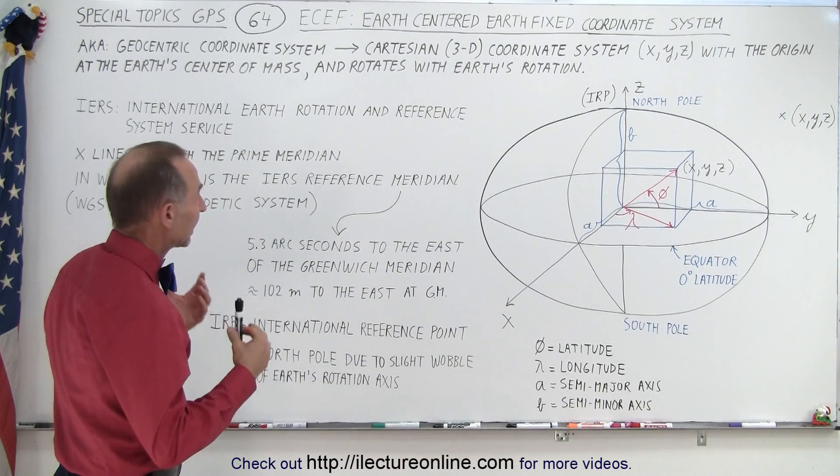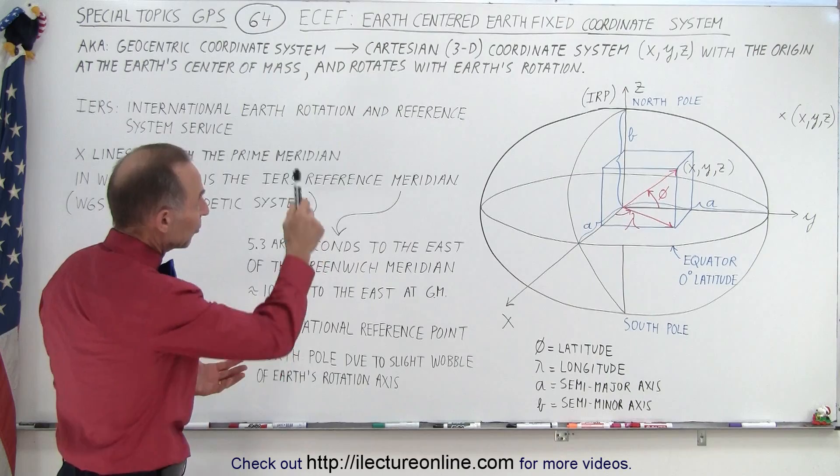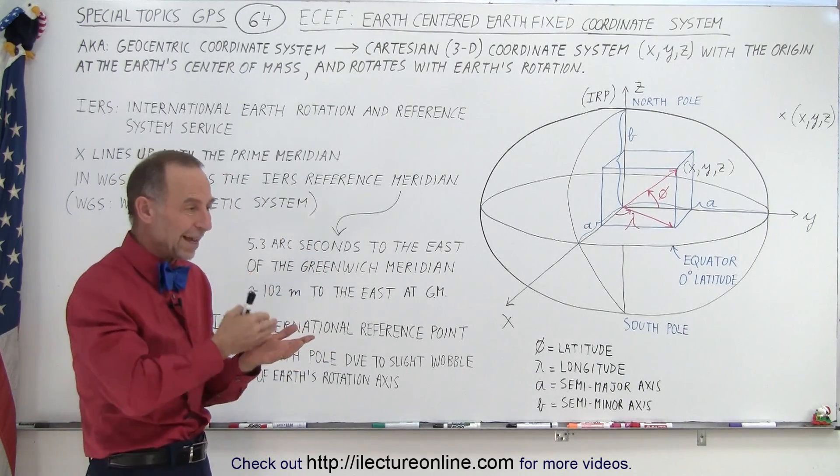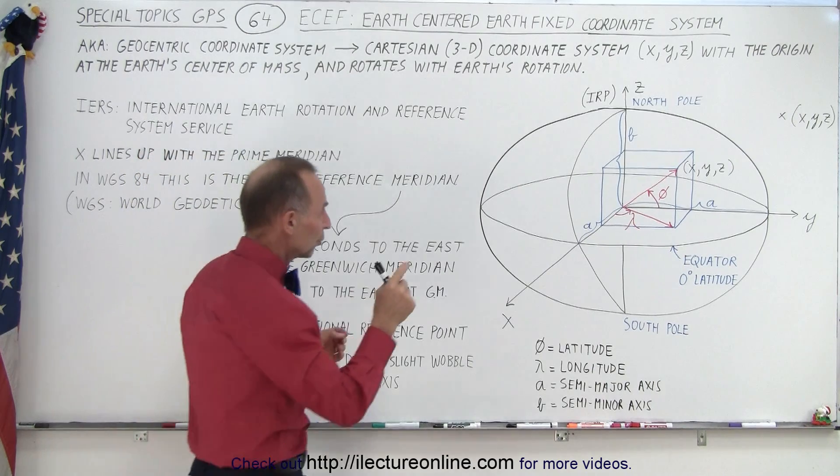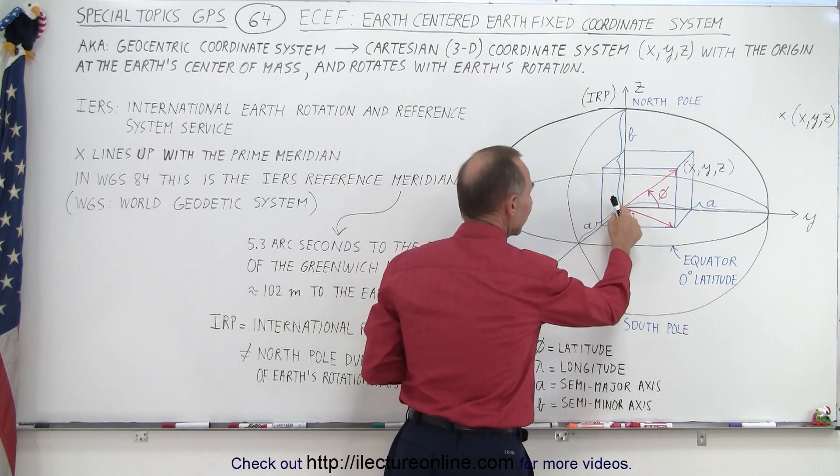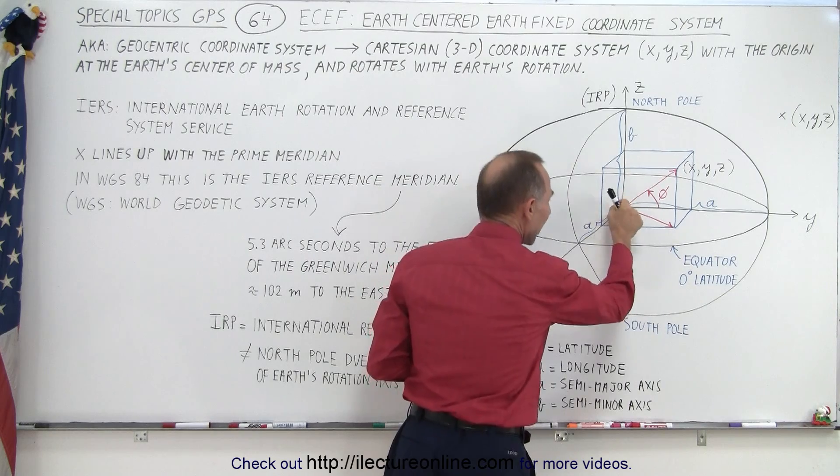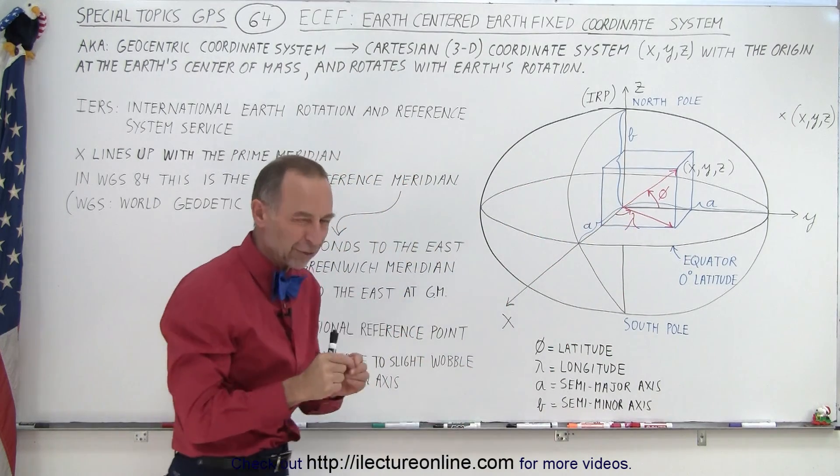So again, the key to that coordinate system is that it's three dimensional. It's Cartesian so we use XYZ. It is relative to the origin. Now the origin is placed not at the geographical center of the Earth but the center of mass of the Earth. They're very, very close but there's a slight difference there.